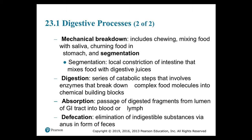Mechanical processing may or may not be required before ingestion — you can swallow liquids immediately, but must process most solids first. The tearing and mashing with the teeth, followed by squashing and compaction by the tongue, are examples of preliminary mechanical processing. Swirling, mixing, and churning motions of the stomach and intestines provide mechanical processing after ingestion. Next is digestion — a series of catabolic steps involving enzymes that break down complex food molecules into chemical building blocks.